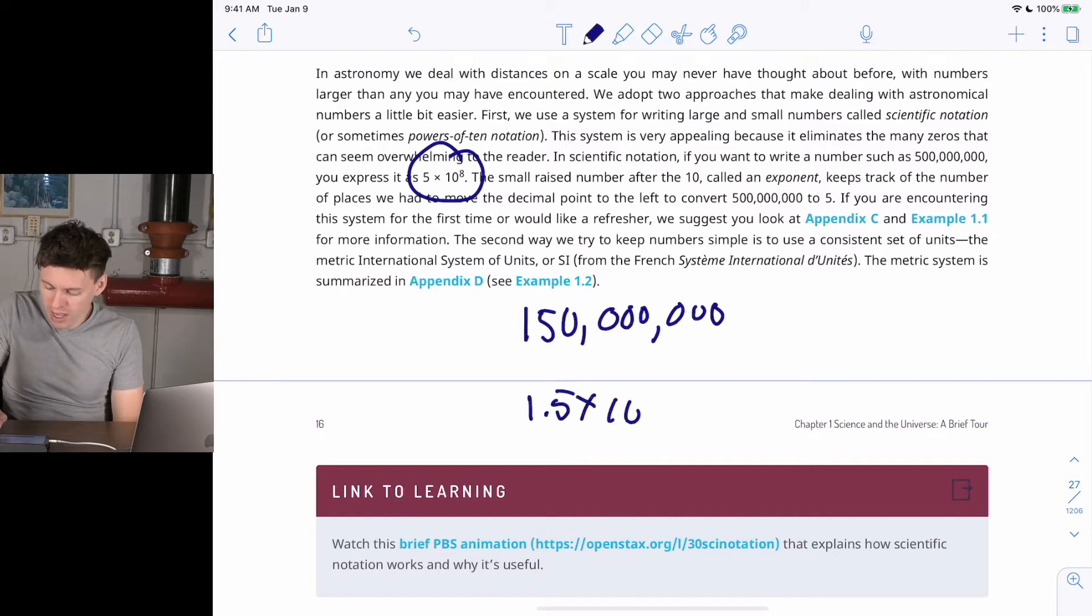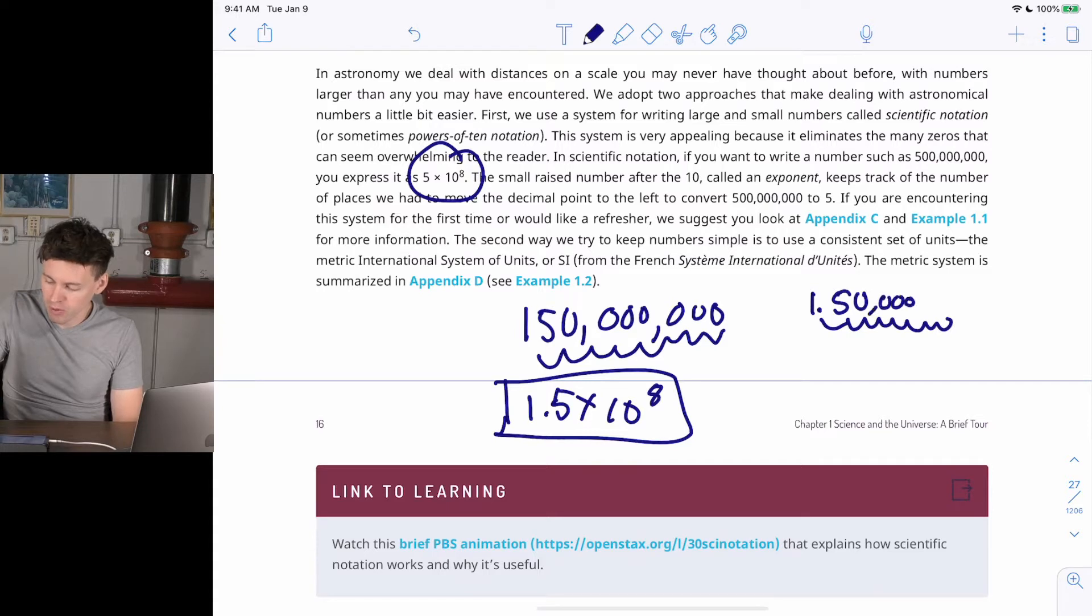1.5 times 10 to the 1, 2, 3, 4, 5, 6, 7, 8 times 10 to the 8. So that's 1.5 times 10 to the 8 just means 1.5 and then go 1, 2, 3, 4, 5, 6, 7, 8. So that's all that is.